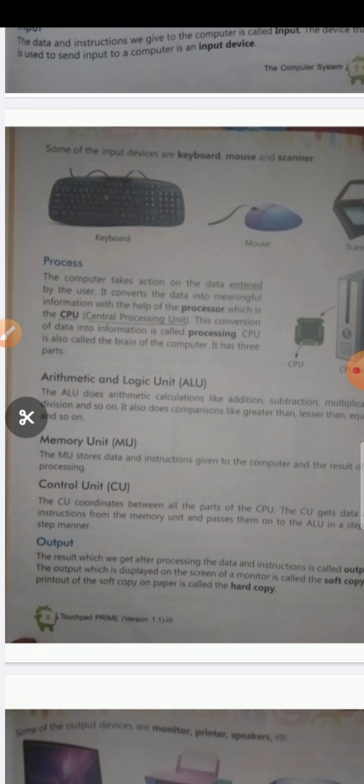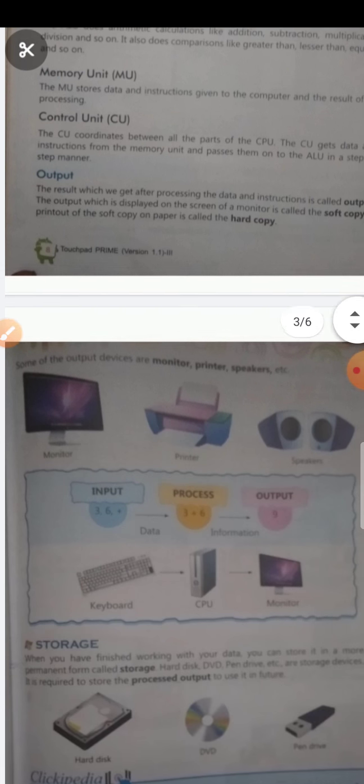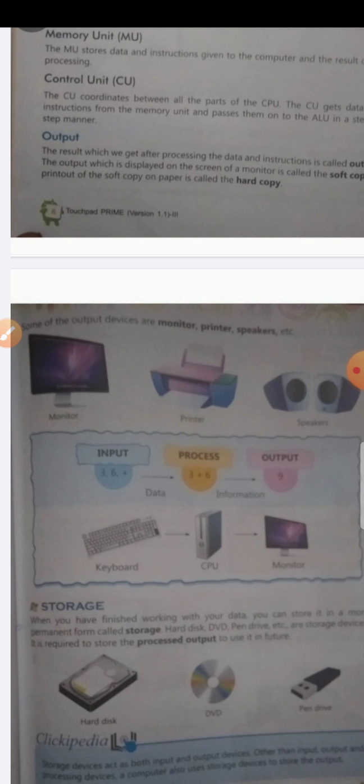Output: the result which we get after processing the data and instructions is called output. The output which is displayed on the screen of the monitor is called a soft copy. A printout of the soft copy on paper is called a hard copy. Some of the output devices are monitor, printer, speaker, etc.